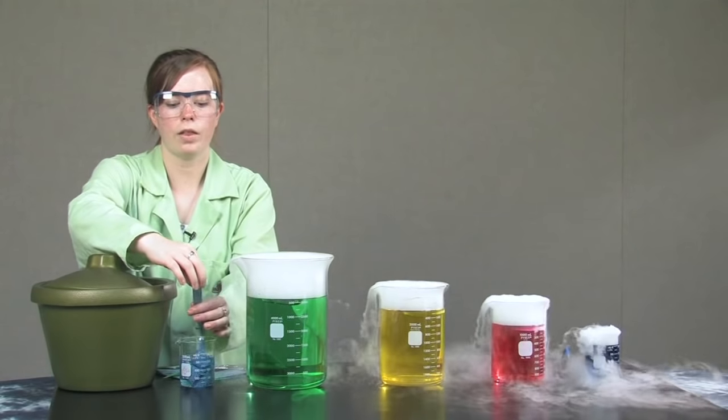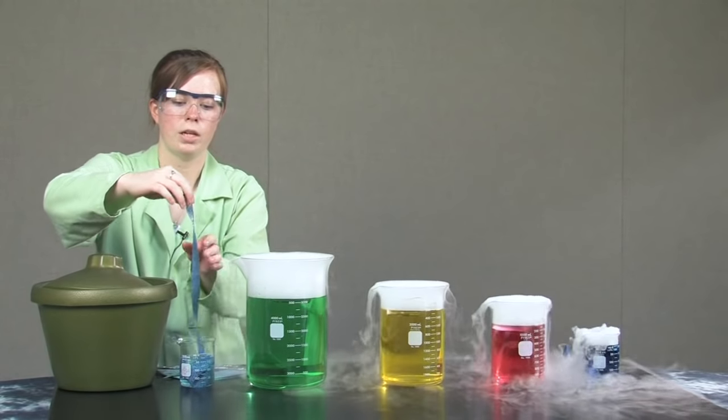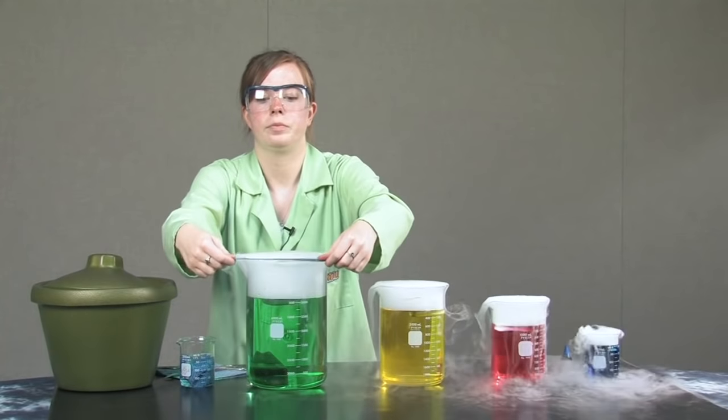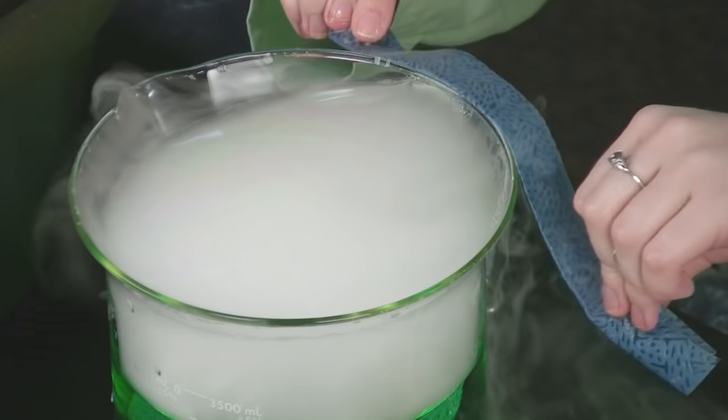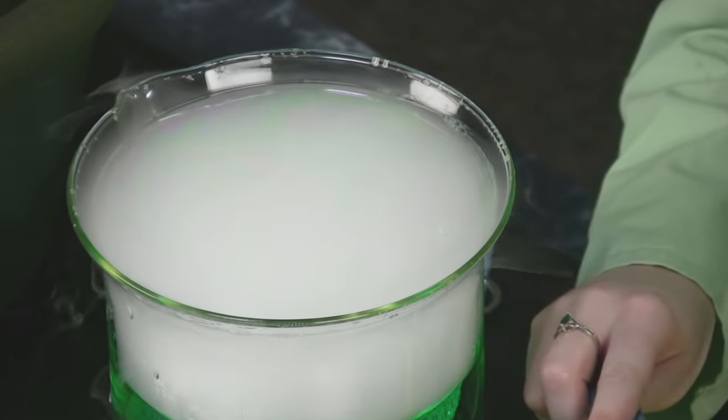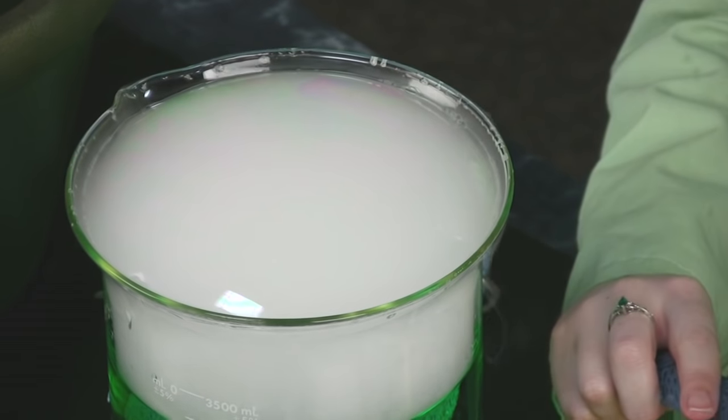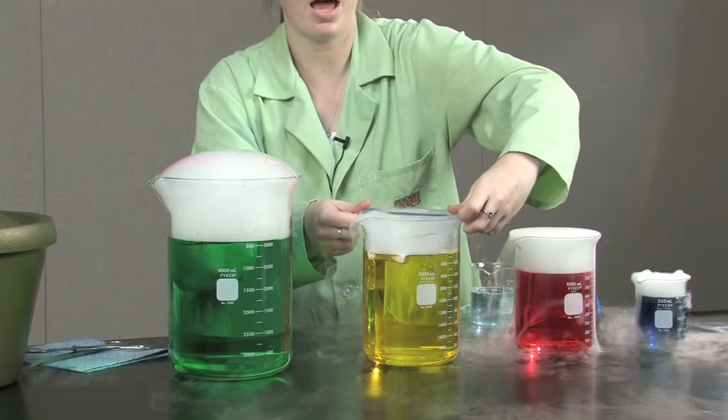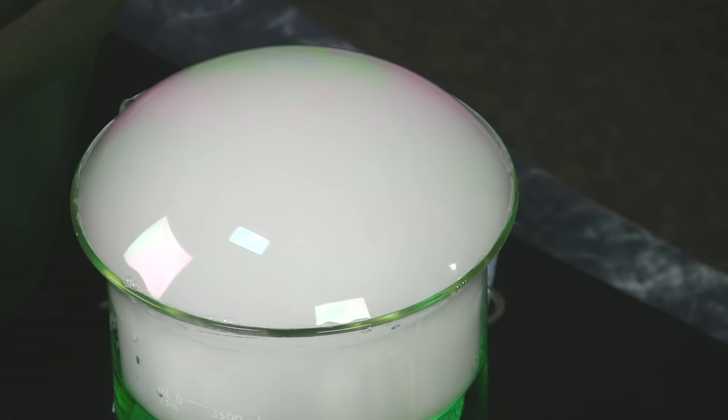This is a strip of cloth that has been soaking in a soapy solution. When I drag it across the top of the beaker, a bubble film will form. Eventually the pressure of the subliming gas overcomes the strength of the bubble and the bubbles will break.